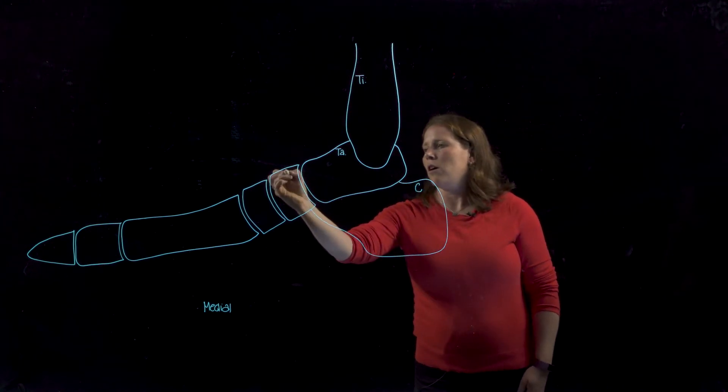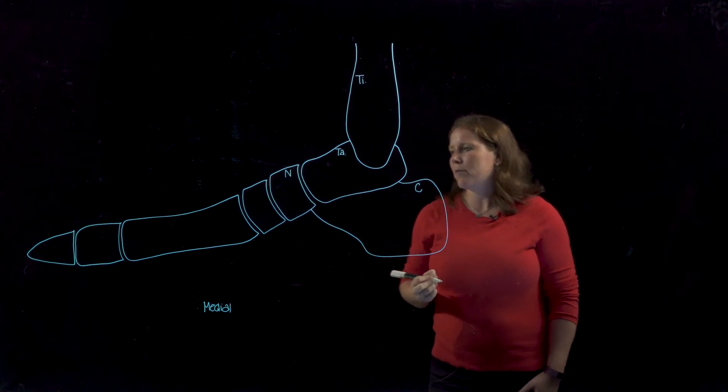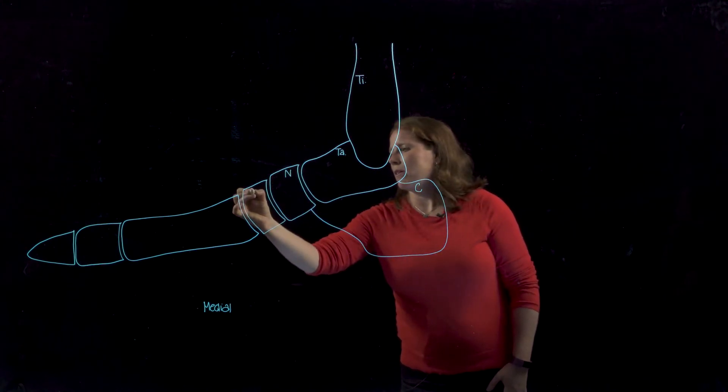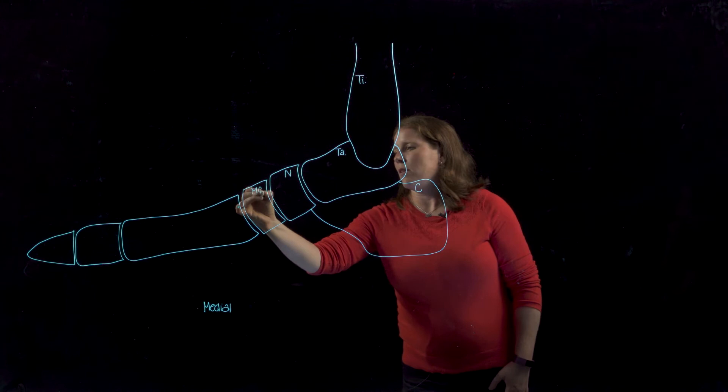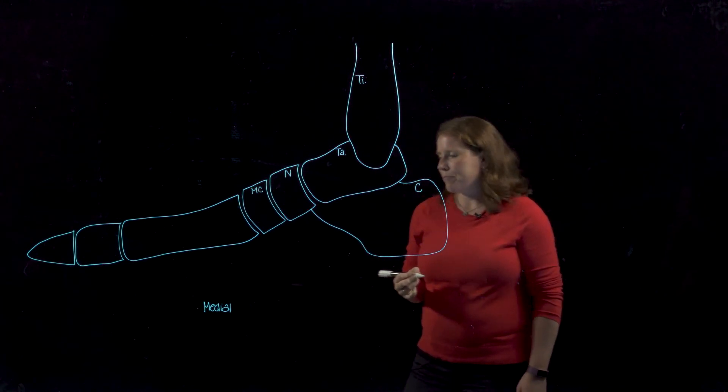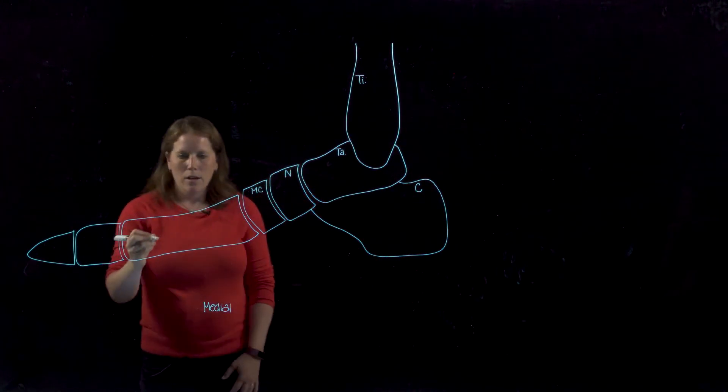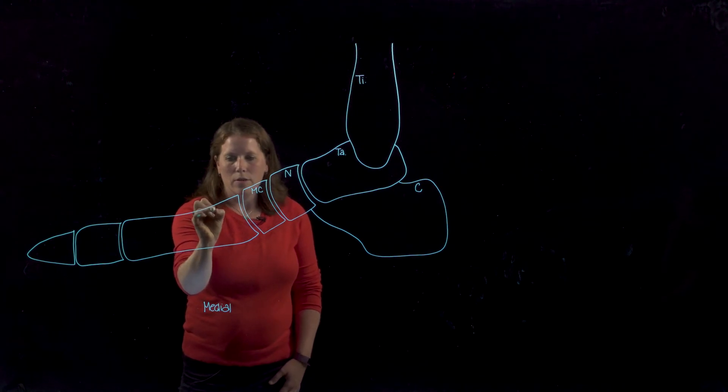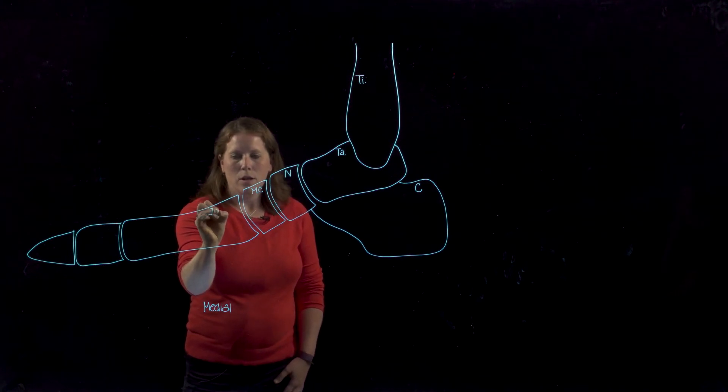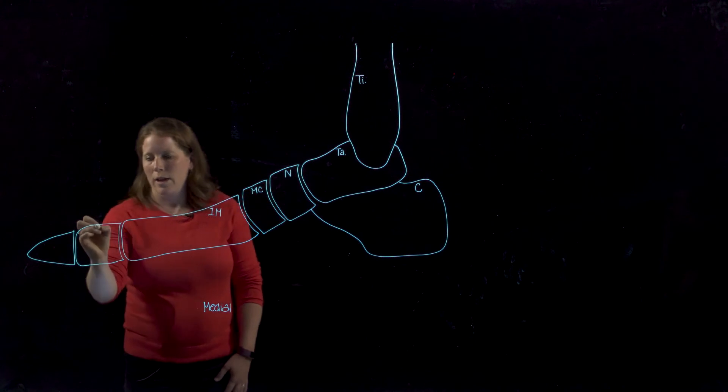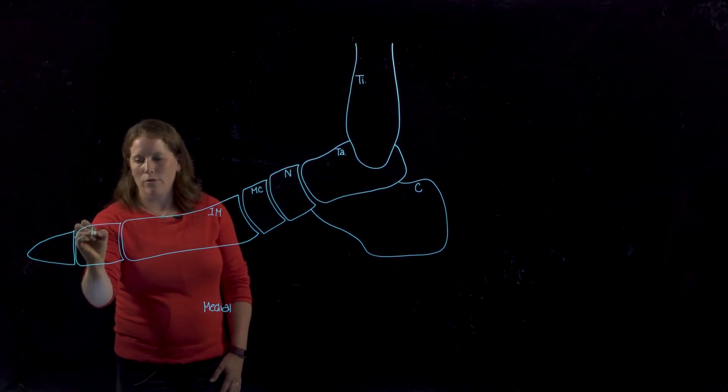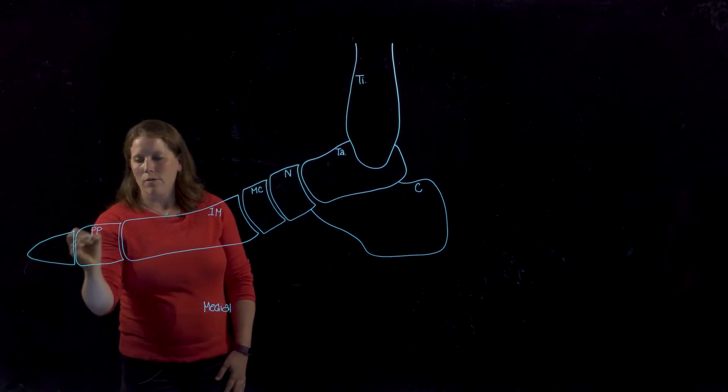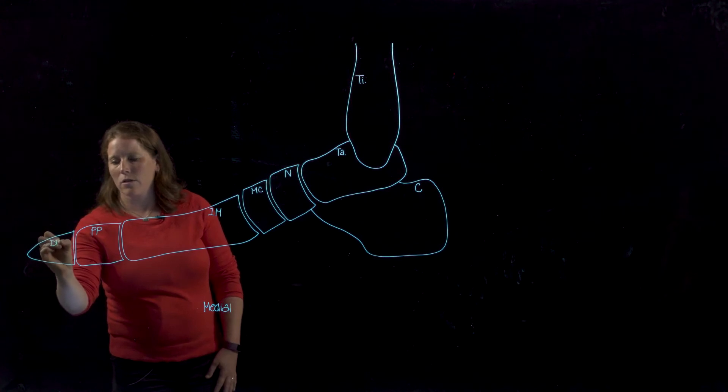The talus also articulates with the navicular which then articulates with the medial cuneiform. Because this is the medial side, this is going to be the first metatarsal and this is for the big toe, so we have just a proximal phalanx and a distal phalanx.